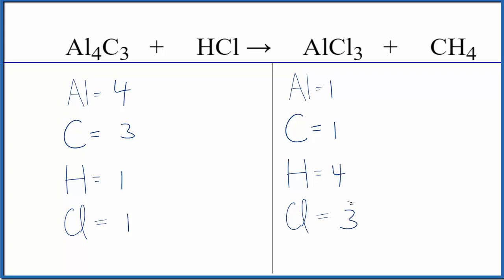Okay, why don't we leave the hydrogens till last and we could just start with the aluminum. We could put a four here as our coefficient. One times four, that would balance the aluminum atoms.